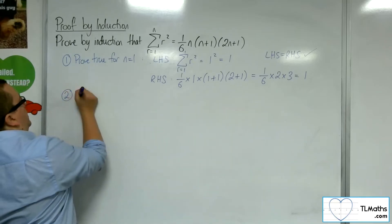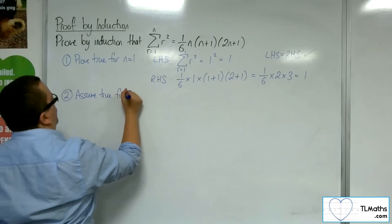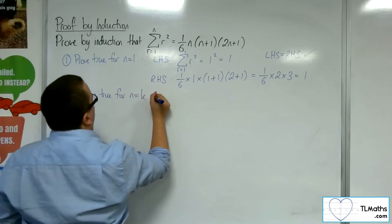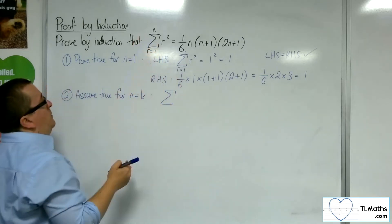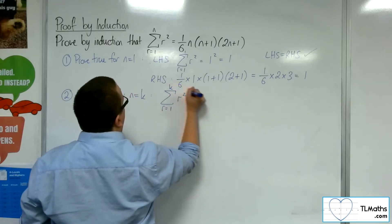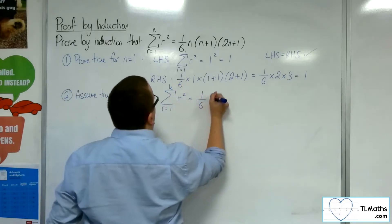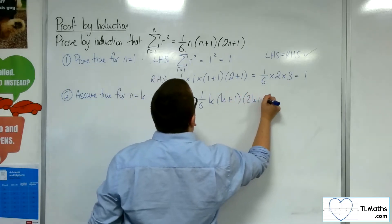Number 2. Assume true for n equals k. What I'm going to do here is replace the n in the formula with k. So, I get the sum of r squared from r is 1 up to k is 1/6 k, k plus 1, 2k plus 1.